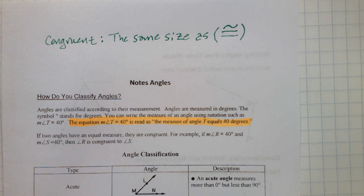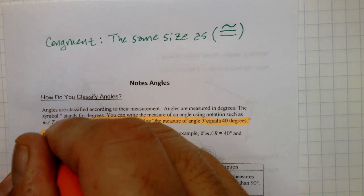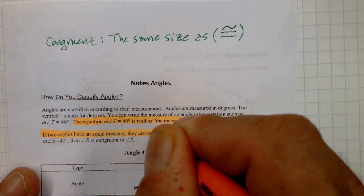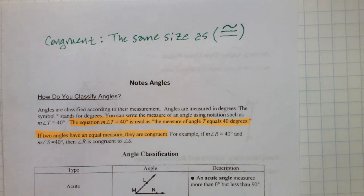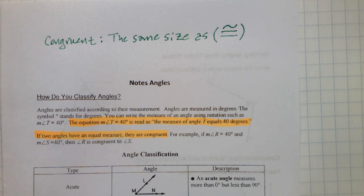If two angles have an equal measure, they are congruent. We usually say that angles are congruent when they're equal in size. For example, if the measurement of angle R equals 40 degrees and the measurement of angle S equals 40 degrees, then angle R is congruent to angle S.